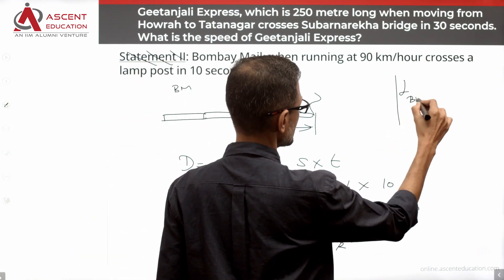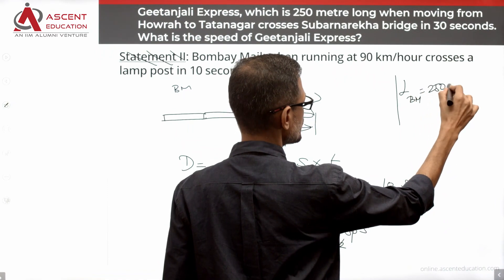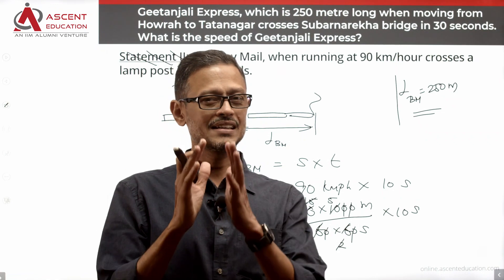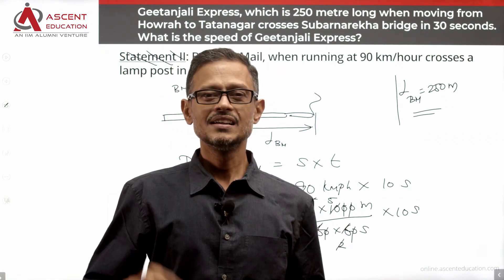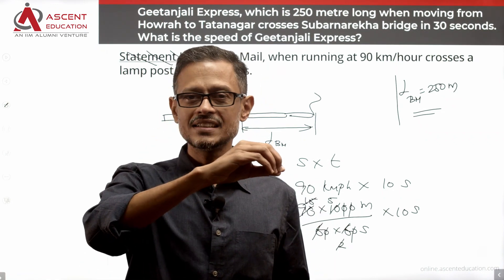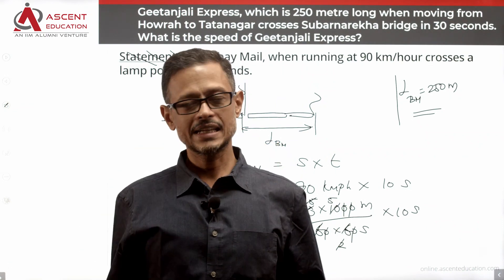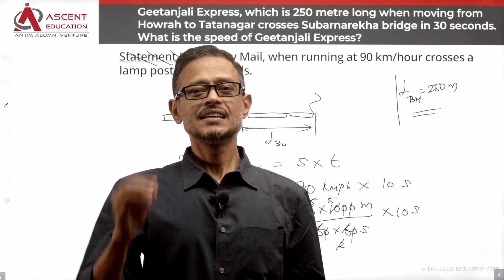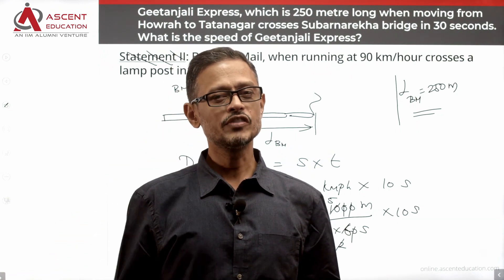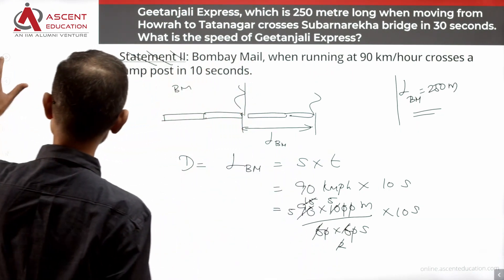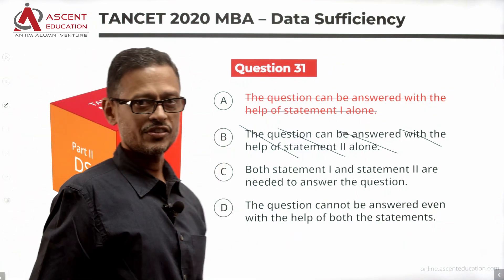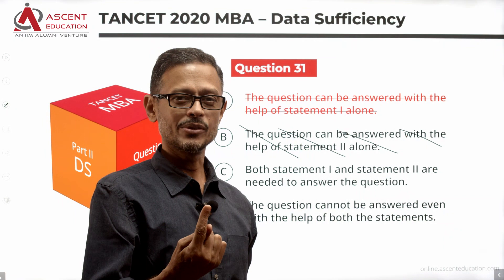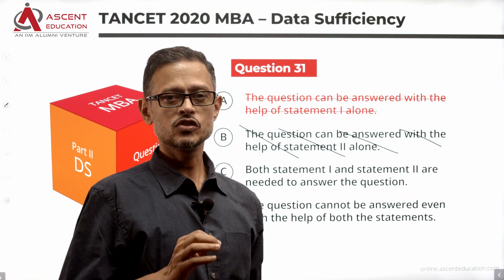From Statement 2, the length of Bombay Mail equals 250 meters. However, Statement 2 alone does not directly give us the speed of Geetanjali Express — it's not sufficient on its own. But one key piece of information is gleaned: the length of Bombay Mail is 250 meters. We rule out answer option B.